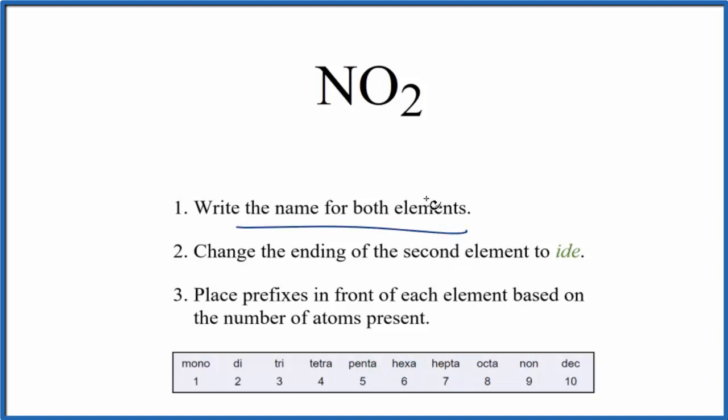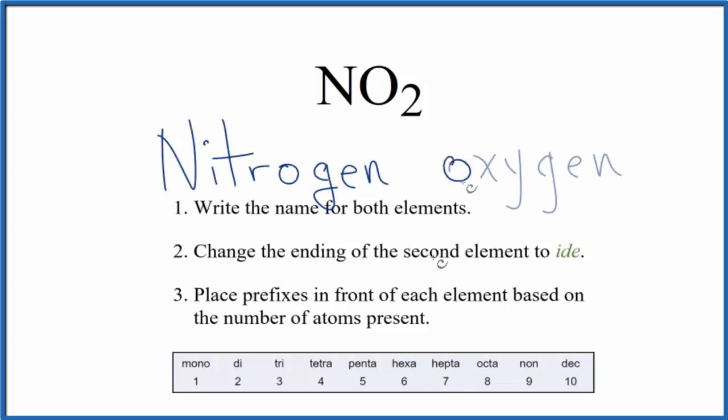First we're going to write the name for both elements. We have nitrogen and then oxygen. For the second element, we're going to change the ending to ide. So we'll take this and change it to ide.